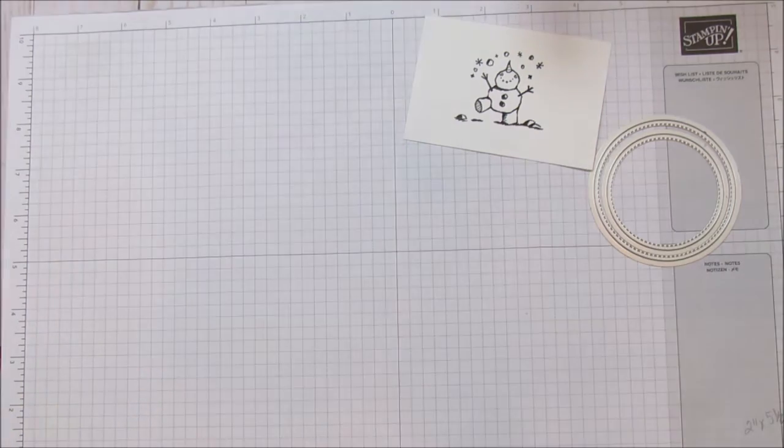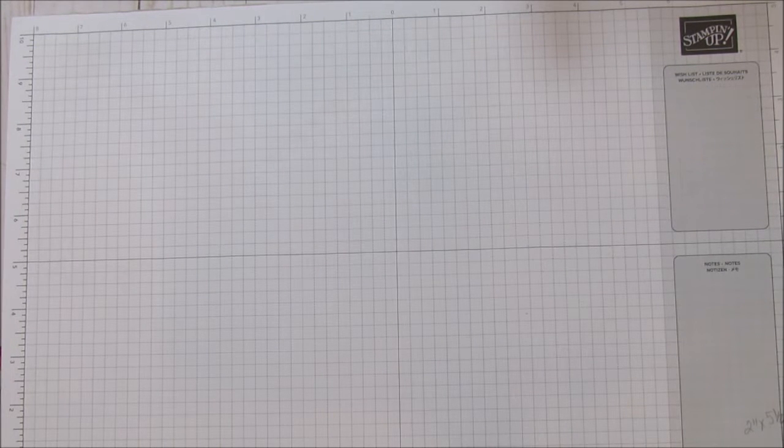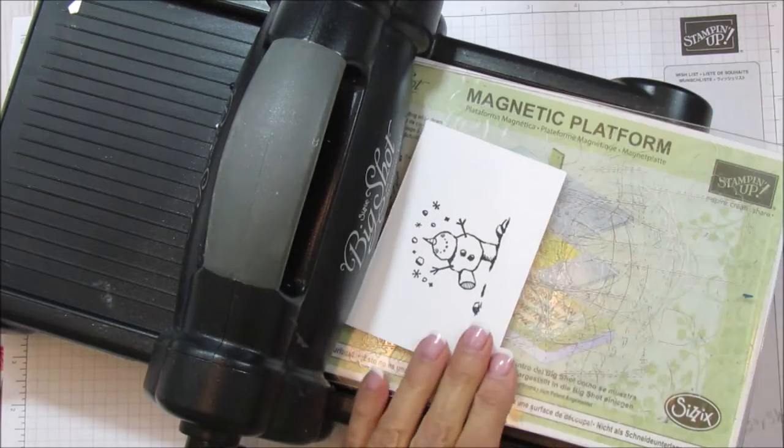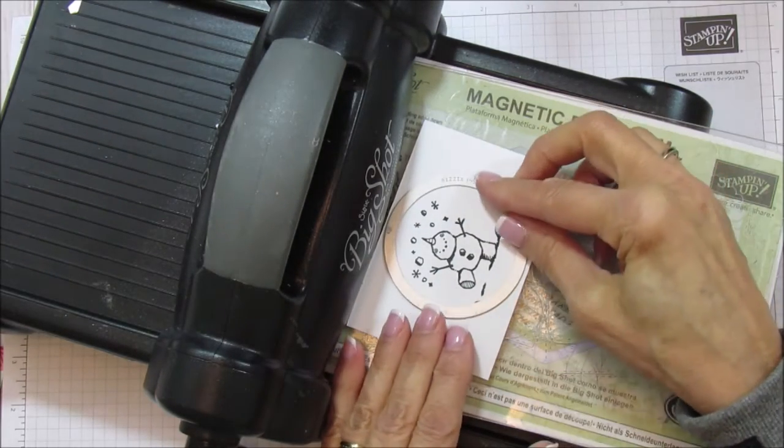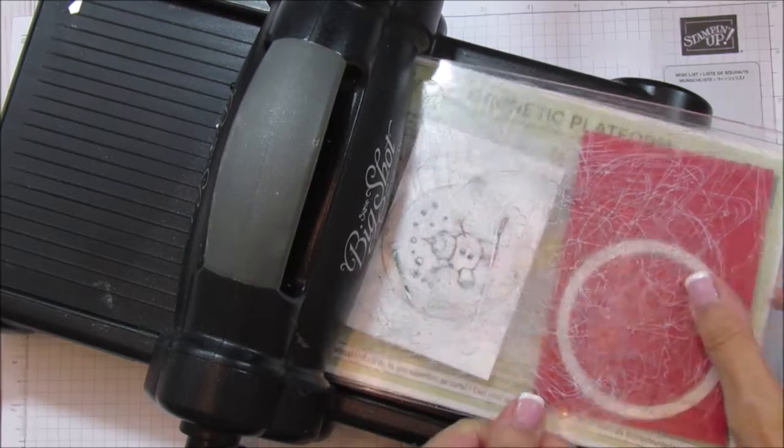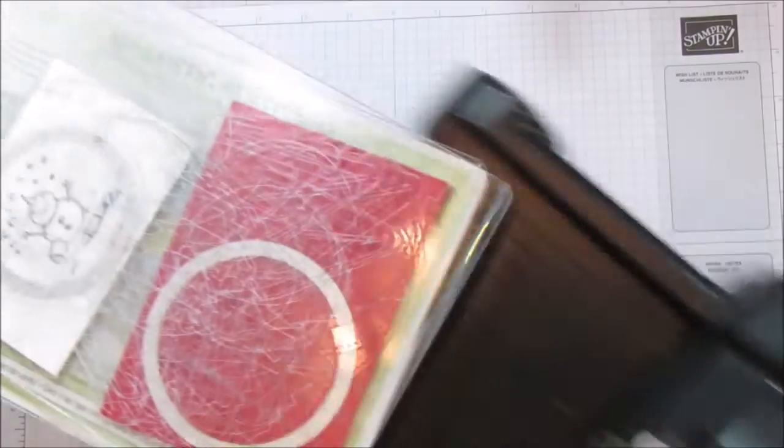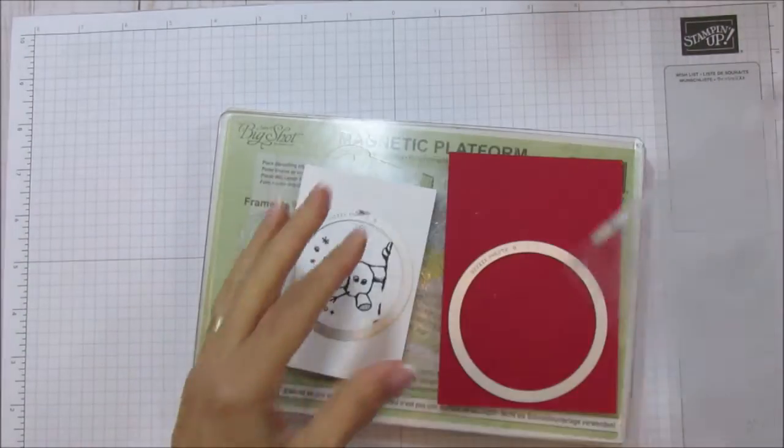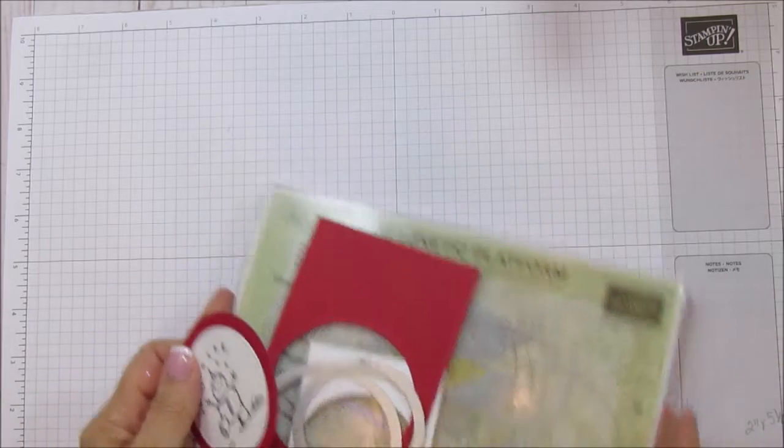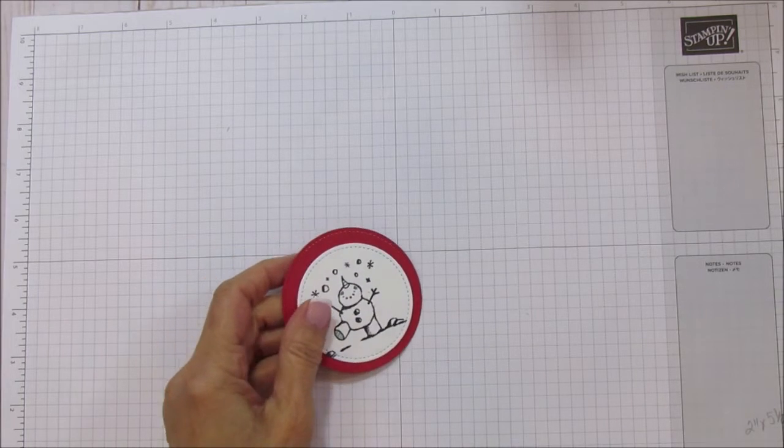Now we'll bring up the big shot and we will cut our little snowman out and our real red circle. So although this is a little bit more of an advanced card, it is very quick and easy actually. We are only using the big shot for these two pieces right here.